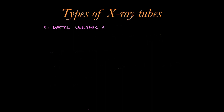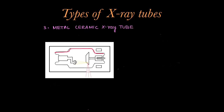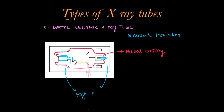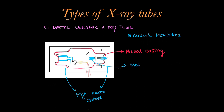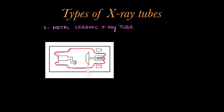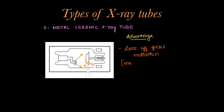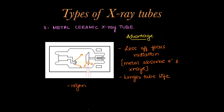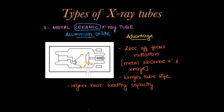The next type is the metal or ceramic x-ray tube, which has a metal housing instead of a glass housing. It has three ceramic insulators: one at the cathode, one at the anode for lining the high power cables, and one ceramic coating at the molybdenum stem. This has a better shelf life than glass envelopes. There is less off-focus radiation in metal envelopes because metal absorbs excessive electrons or x-rays that are off-focus. It has a longer tube life and higher heat loading capacity. The ceramic is made of aluminium oxide.